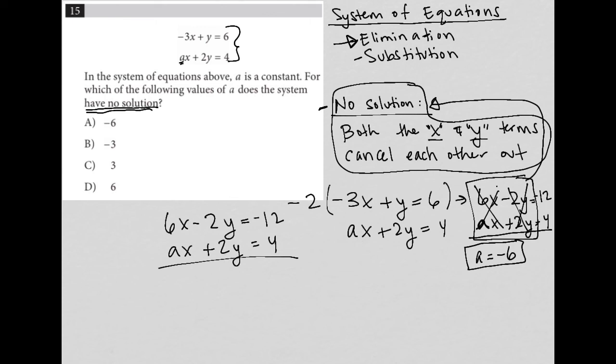But remember, the X values want to cross out as well, right? So that's how we find that A must be negative 6 in order for both those things to cross out, and therefore A is the answer.